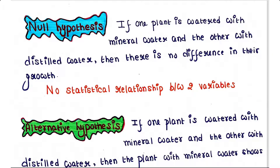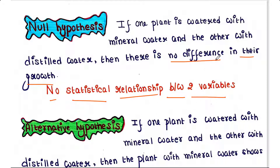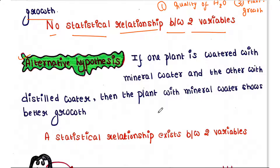The null hypothesis of the above experiment is: if one plant is watered with mineral water and the other with distilled water, then there is no difference in their growth. That means there is no statistical relationship between the two variables. In this case, variable one is quality of water and variable two is plant's growth.